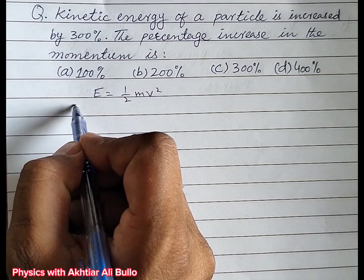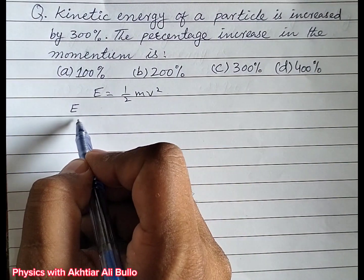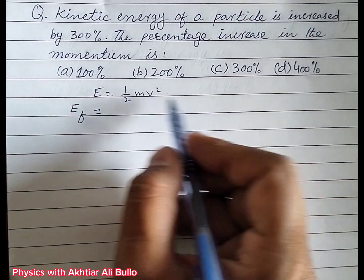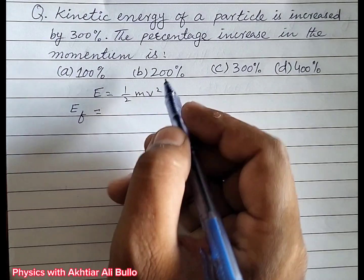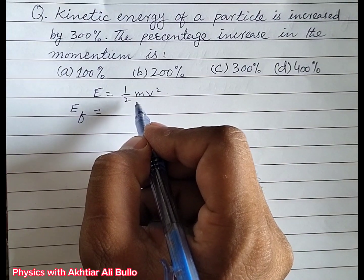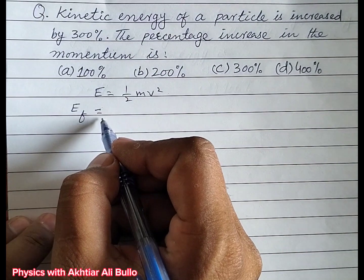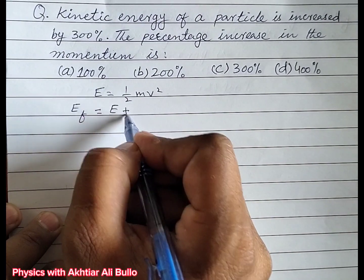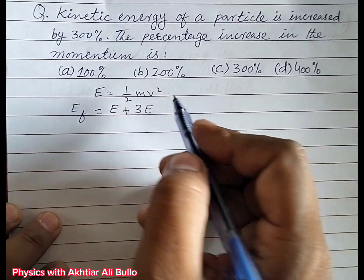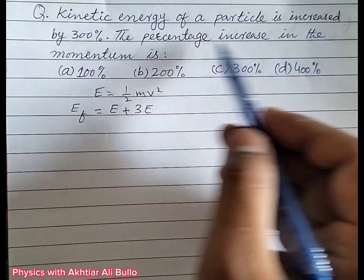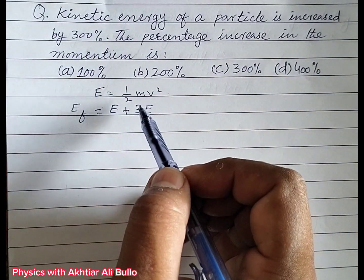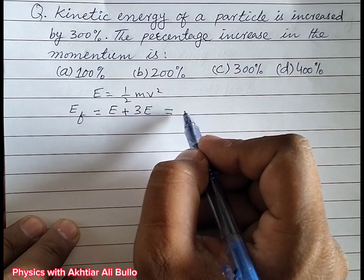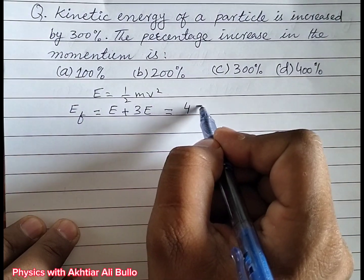The initial kinetic energy will be equal to E = ½mv². The final kinetic energy will be equal to E plus 3E, because kinetic energy is increased by 300%, so we take 3E. That gives us E + 3E = 4E.